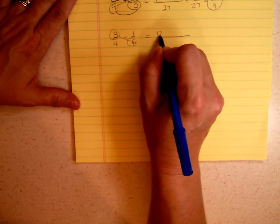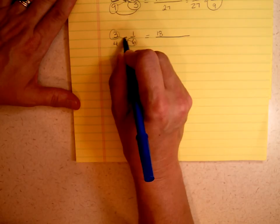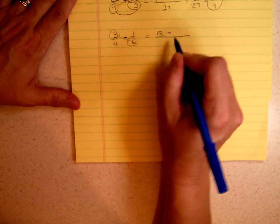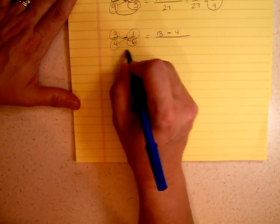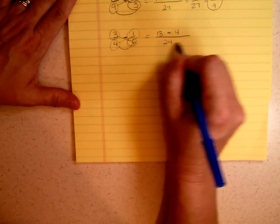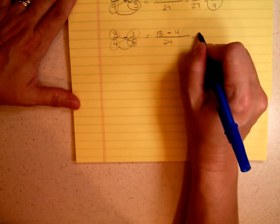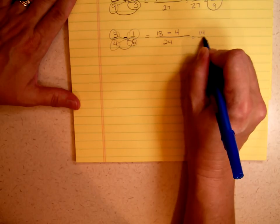3 times 6 is 18. In this case, because I have a minus, I'm going to put a minus sign here. 4 times 1 is 4, and all of that is divided by 24.